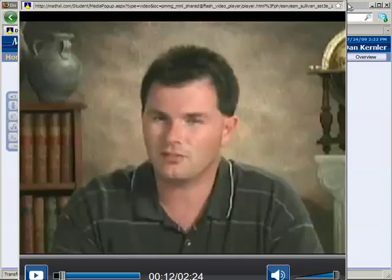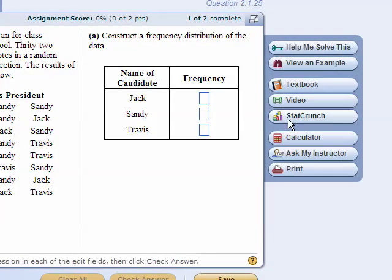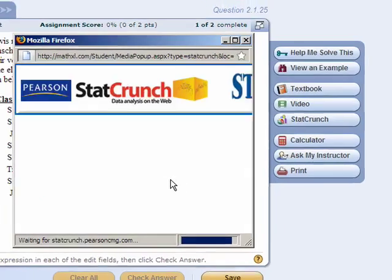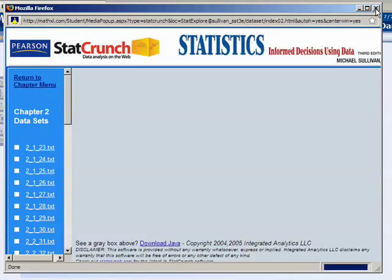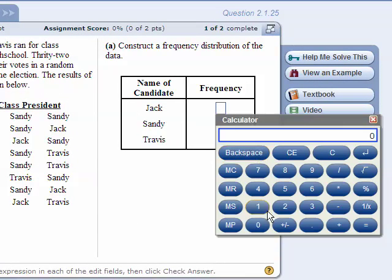Okay, next, StatCrunch. We'll be using this a lot this semester. This is the statistical tool. You don't really need an introduction into that. That's a different video. But if you click on that button, it opens up the StatCrunch window. If you're just doing some basic calculations, there is a basic calculator here. Just like add, subtract, and wave. If you're doing anything more complicated than that, you want to use the StatCrunch.